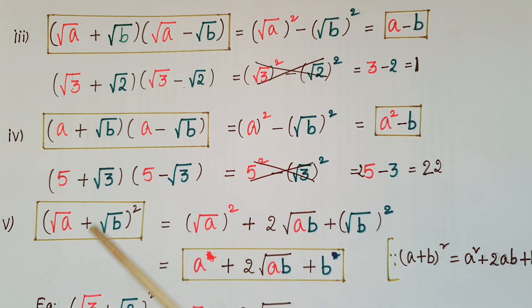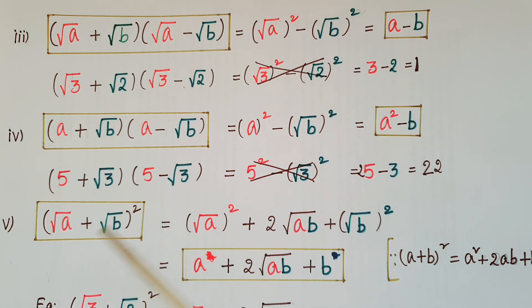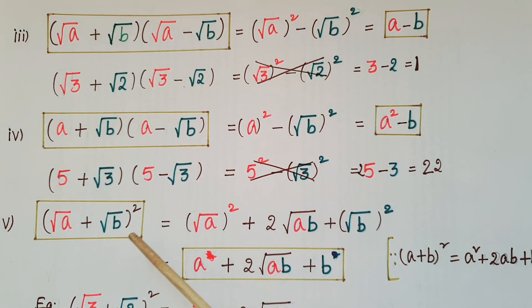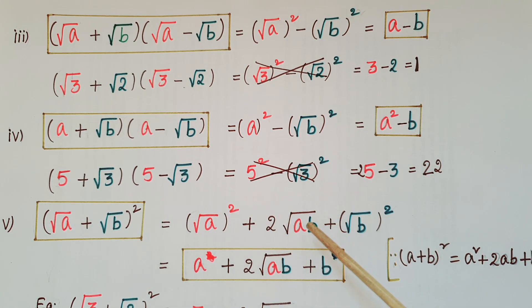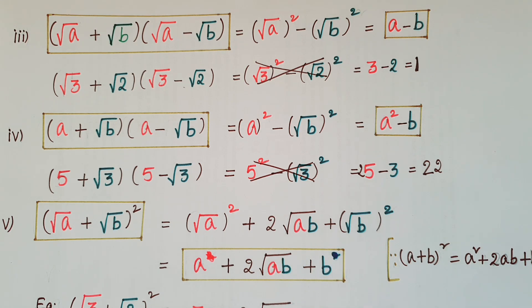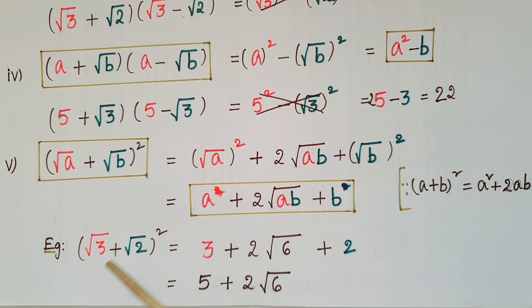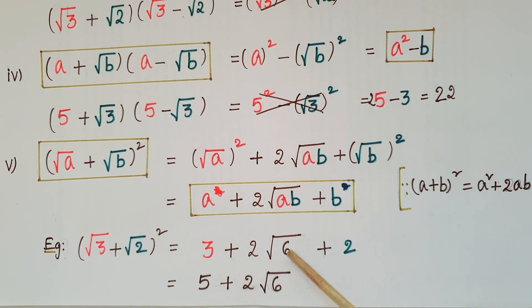The next one: (root a + root b) whole square is in the form of (a + b)². We know (a + b)² = a² + 2ab + b². Here a is root a and b is root b, so: (root a)² + 2·root a·root b + (root b)² = a + 2·root(ab) + b. For example, (root 3 + root 2)² = 3 + 2·root(3×2) + 2 = 5 + 2·root 6.